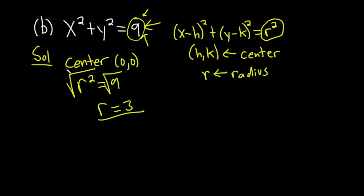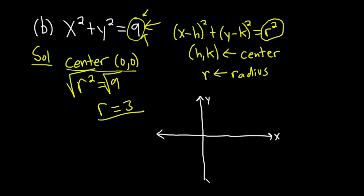We've got the radius and the center — all that's left is to draw our circle. Starting from the center (0, 0), we go up, down, left, and right by 3, placing a dot at each point. Then you attempt to make a circle connecting those dots and just do your best. That would be the graph of the equation of the circle.